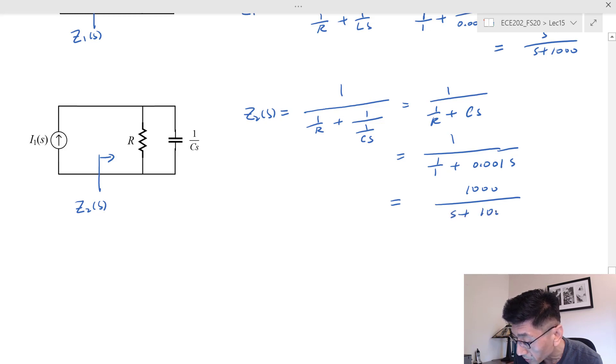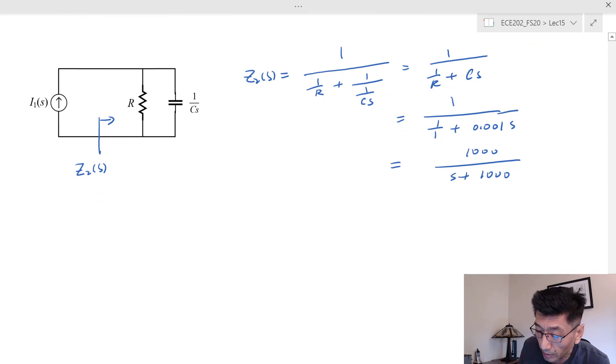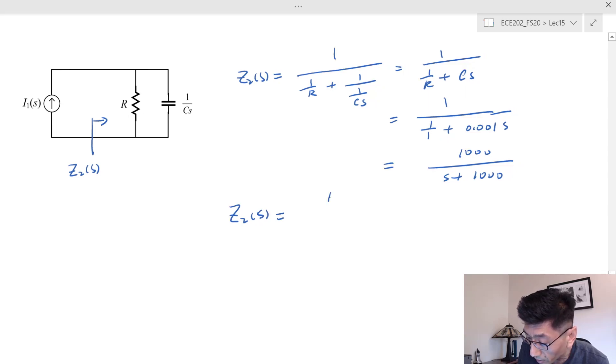Also, we can use the product over the sum, and Z₂(s) is equal to R times 1/(Cs) divided by R plus 1/(Cs).